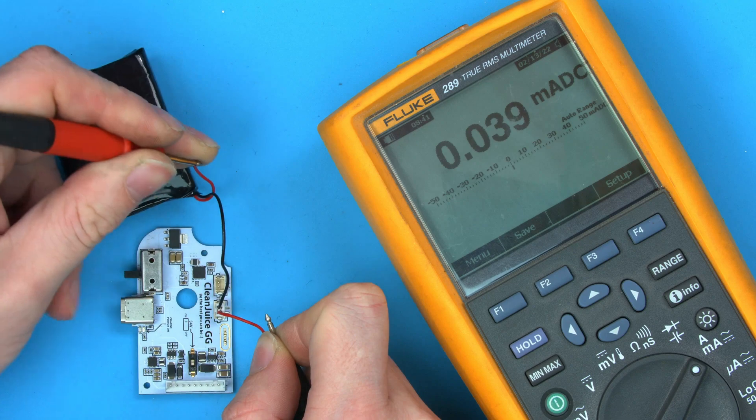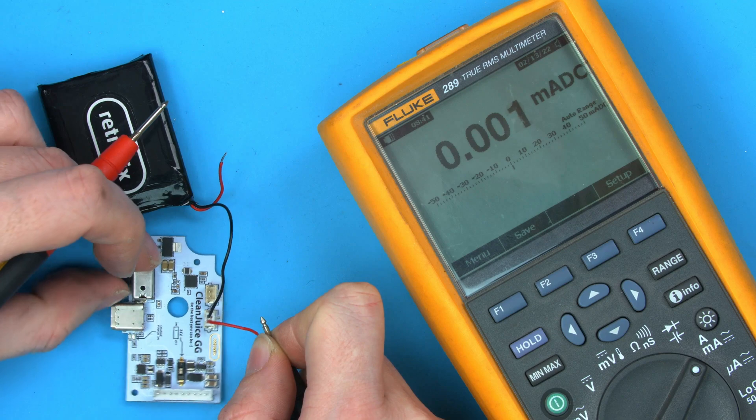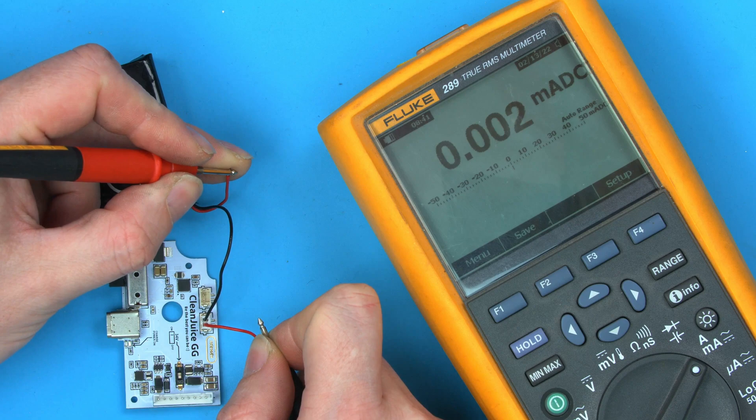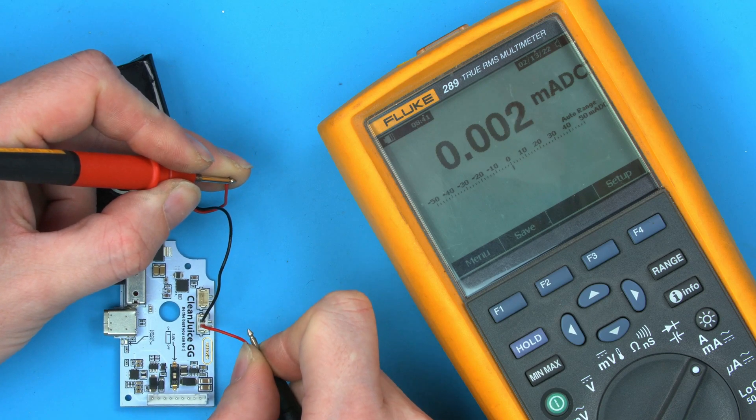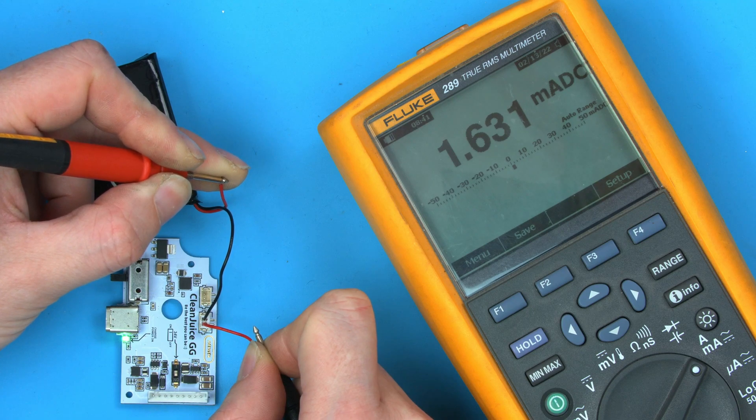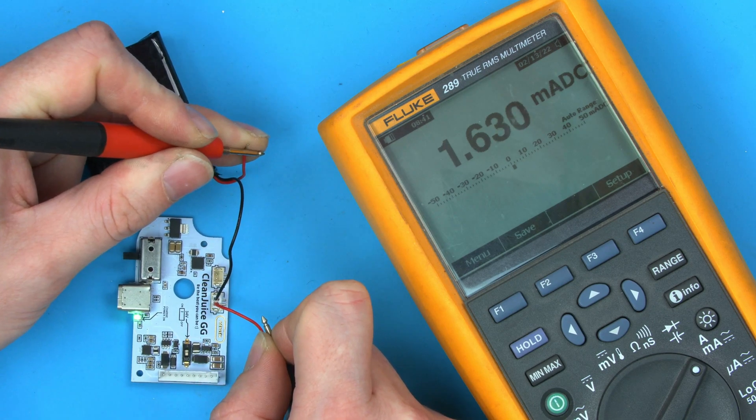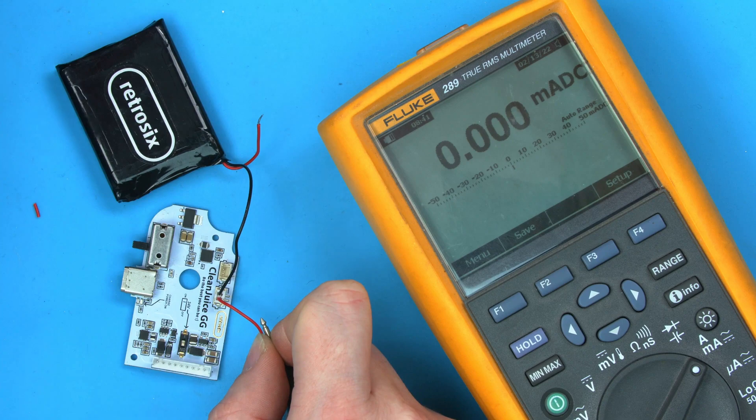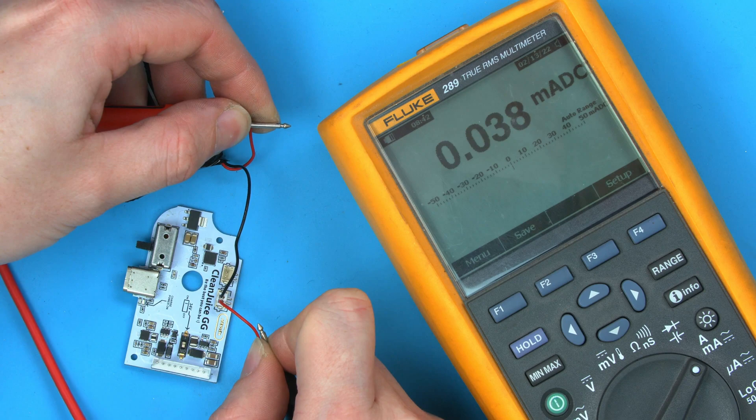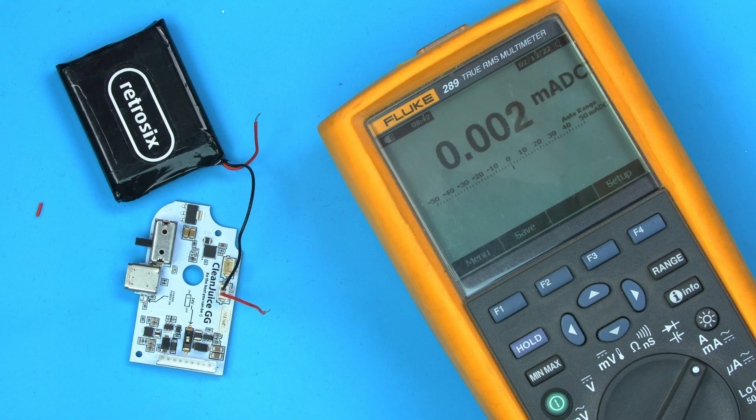If I bring the multimeter in, we'll go to milliamp mode because there should be nearly nothing. If we take the red lead, go into the actual Clean Juice, hold that in my hand, and connect here, you can see it's drawing 0.04 milliamps. That means while the circuit's not turned on, it's drawing 0.03 milliamps. If we turn it on and connect, we shouldn't draw much more. It'll take a minute to get an accurate measurement. You can see it's only drawing 1.6 milliamps turned on.